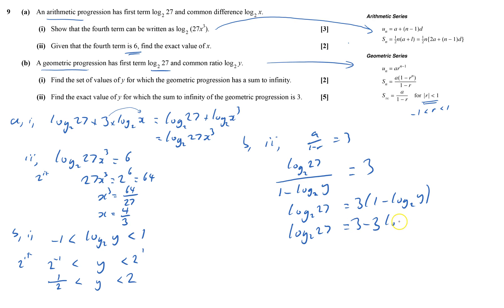So log to base 2 27 plus 3 log to base 2 y equals 3.